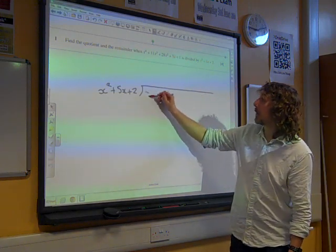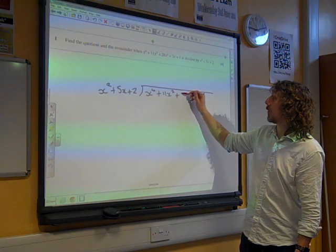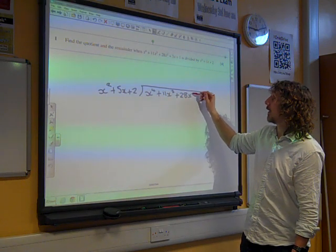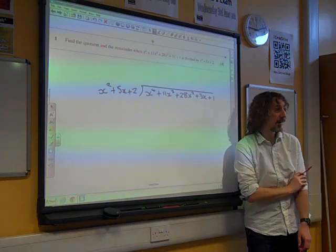They haven't missed out any of the terms. We've got all of the terms in order. We've got an x to the 4, an x cube, x squared, an x term, and a number term. So it's all there exactly as we would want.